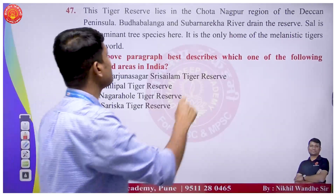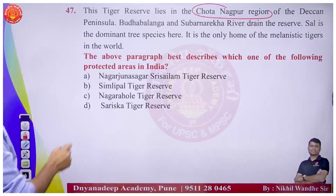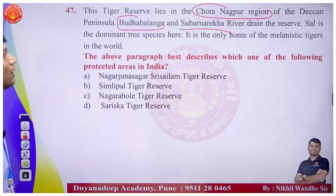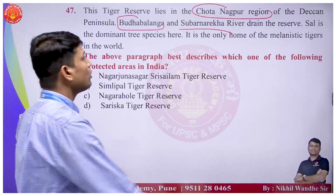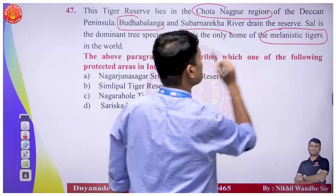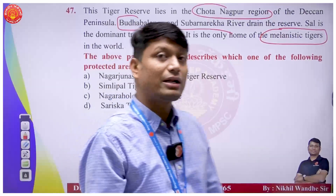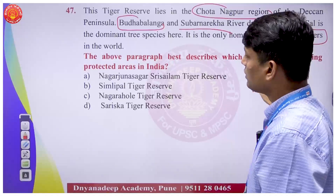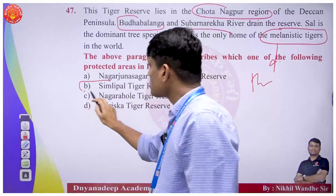A reserve lies in the Chhota Nagpur region, drained through the Rikha river, with Sal as the dominant tree species. It is home to melanistic tigers in the world. We are talking about Simlipal Tiger Reserve here.